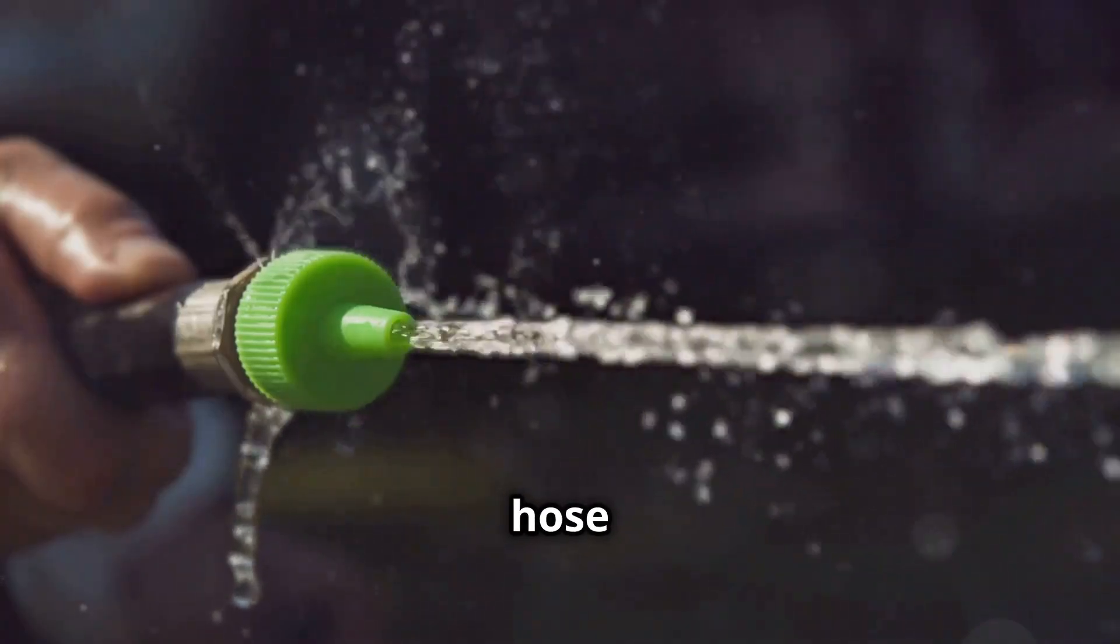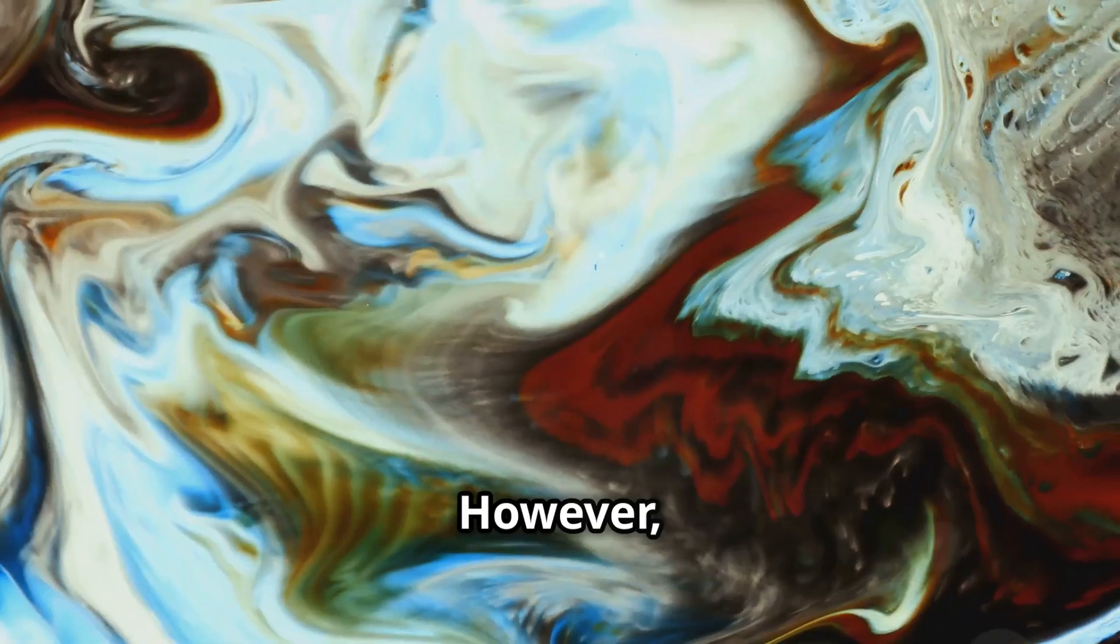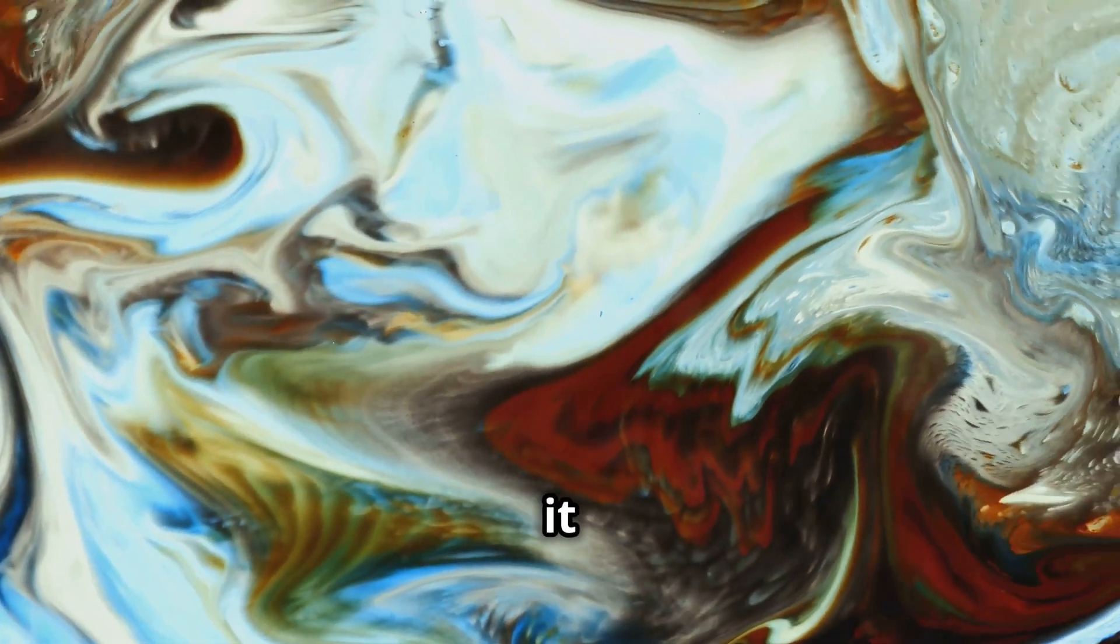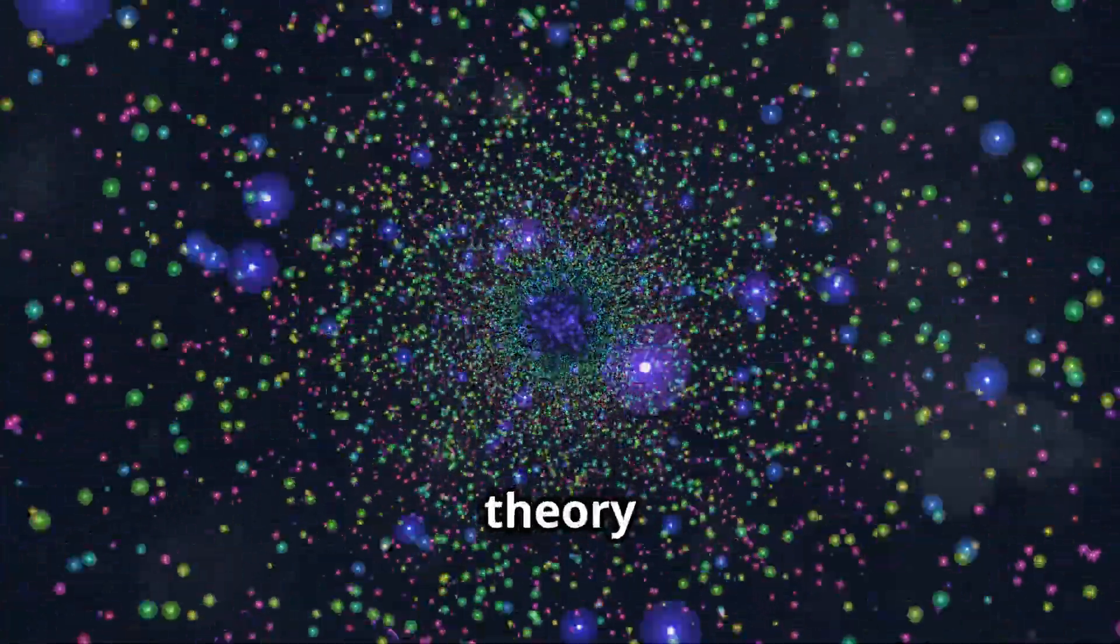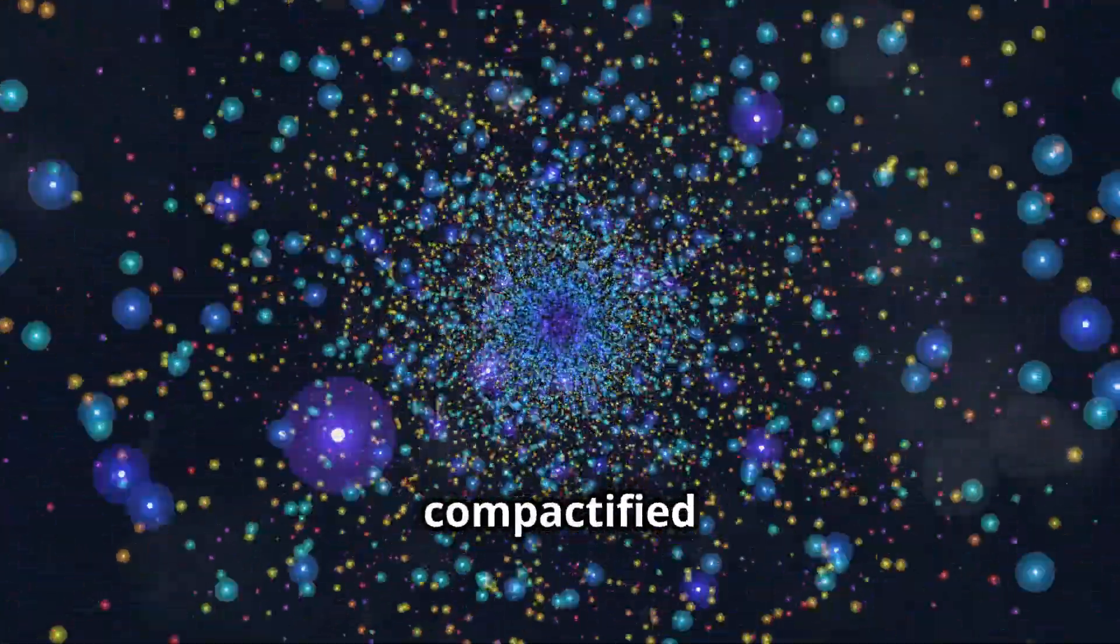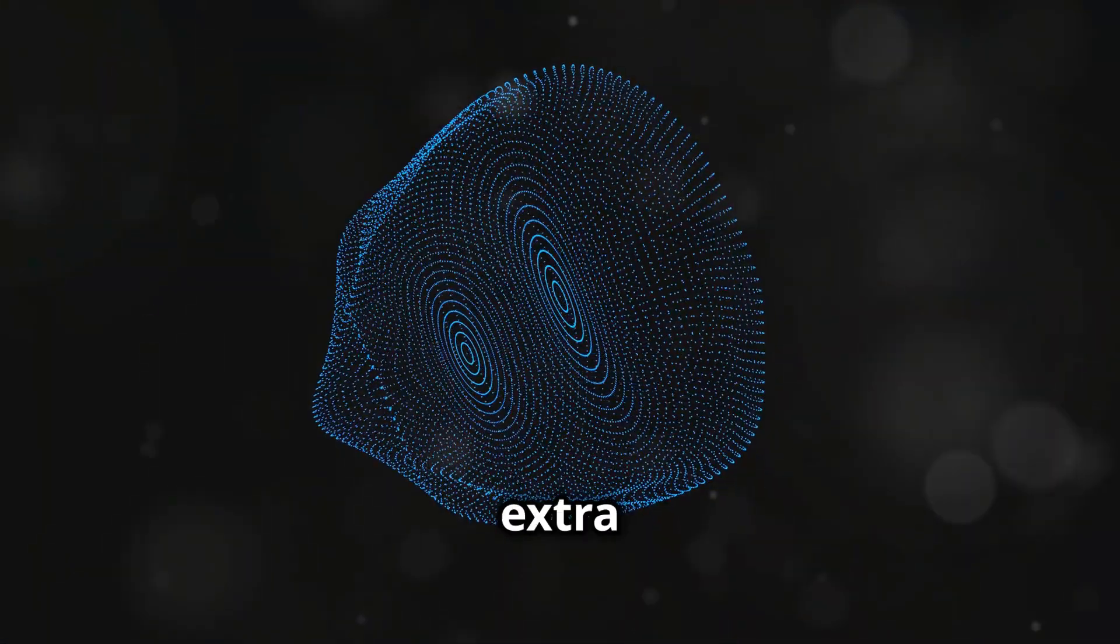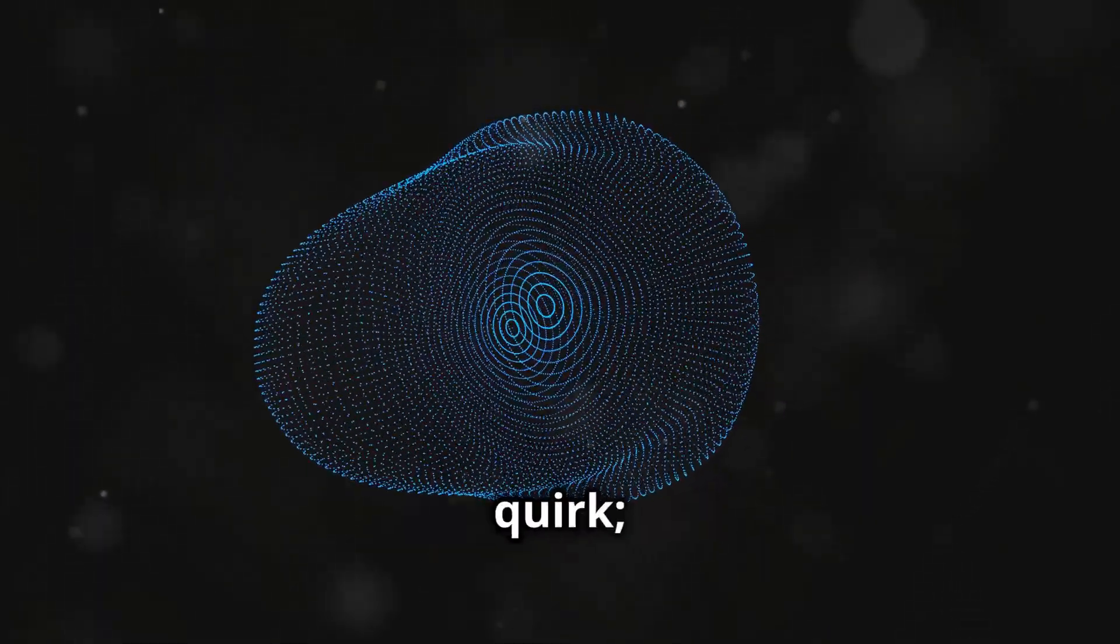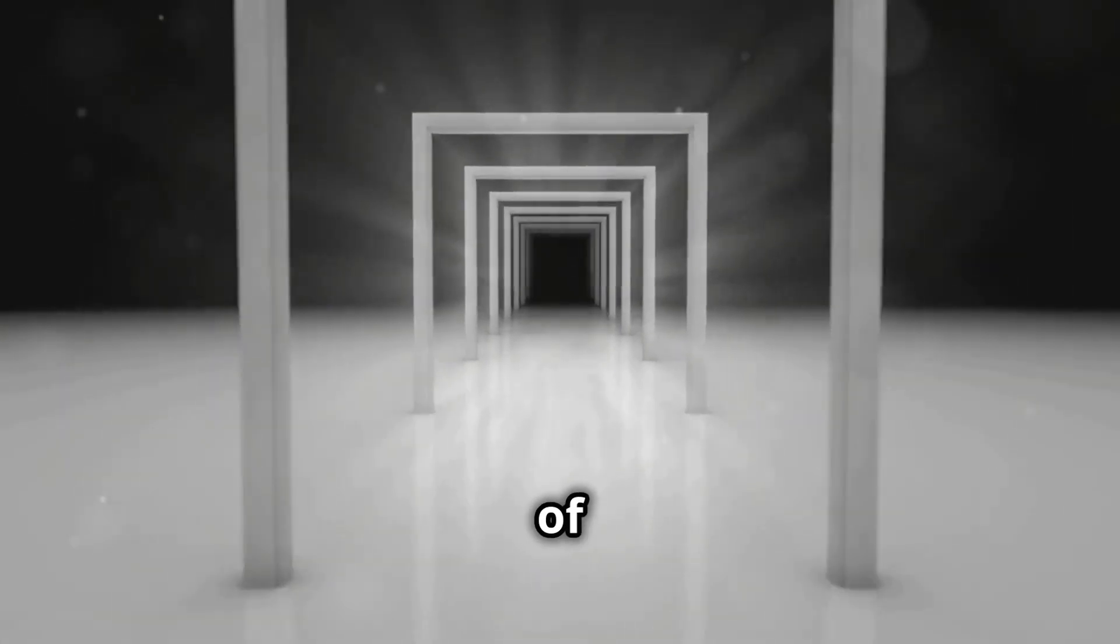Imagine a garden hose viewed from a distance. It appears as a one-dimensional line. However, upon closer inspection, we see that it has a second dimension, curled up in the form of a circle. Similarly, string theory proposes that our universe has additional dimensions, compactified to such a small scale that we don't perceive them directly. These extra dimensions are not just a mathematical quirk. They play a crucial role in the consistency and stability of string theory.